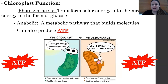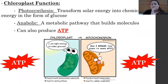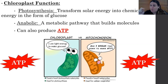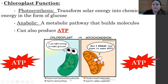The thylakoids have a very high surface area, which allows the chloroplast to transform a lot of solar energy into chemical energy in the form of glucose. This is an anabolic reaction — a metabolic pathway that builds molecules. The main goal is to make glucose, but along the way a small amount of ATP is also made during the photosynthesis reactions. So photosynthesis uses ATP but also makes a small amount of ATP.